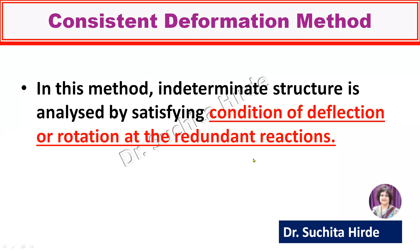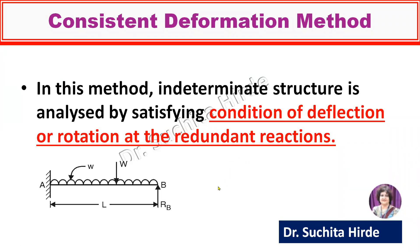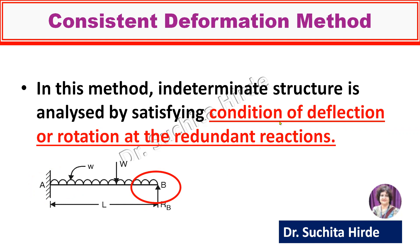Let us consider a propped cantilever. If you consider this support, this is a fixed support. Here we have the condition of deflection that deflection at A, that is delta A, is zero. We also have rotation at fixed support equal to zero, that is theta A equal to zero and delta A equal to zero. These are the conditions available at support A. Similarly, at support B, we have the condition of deflection that delta B equal to zero.